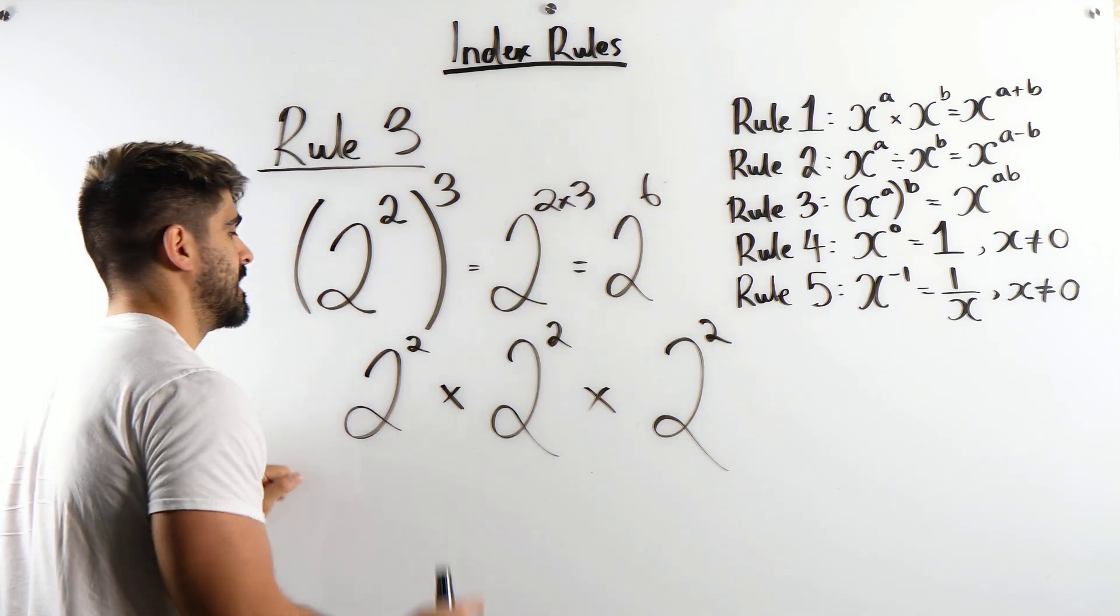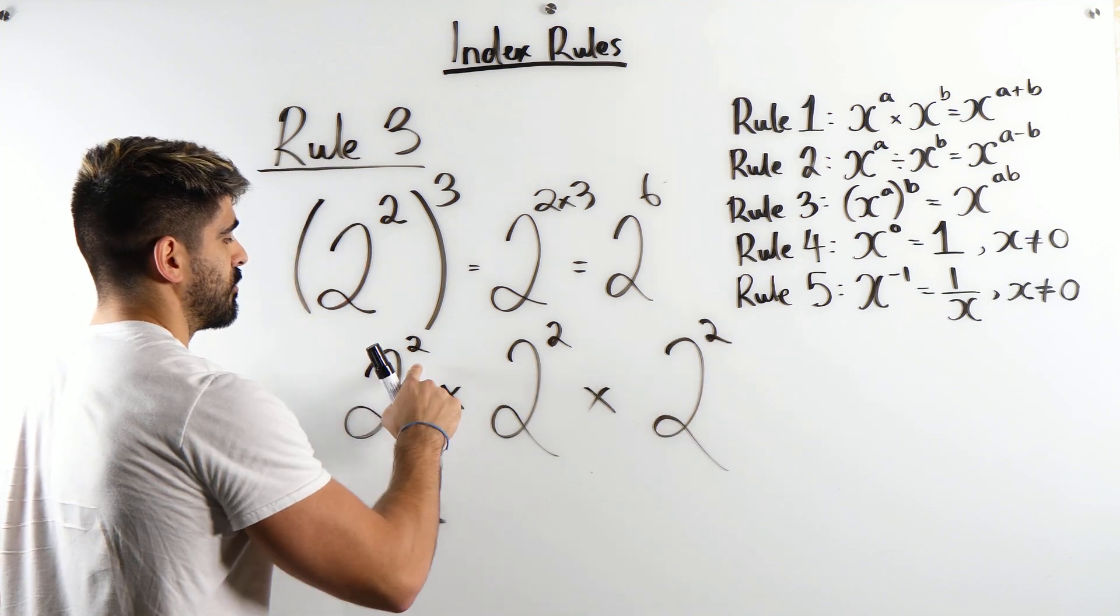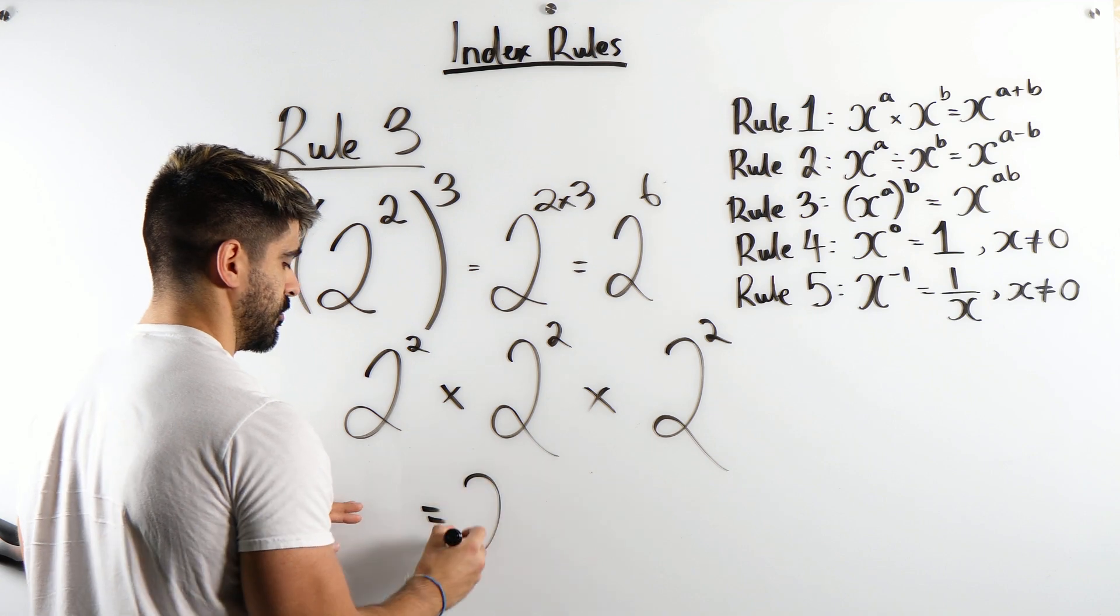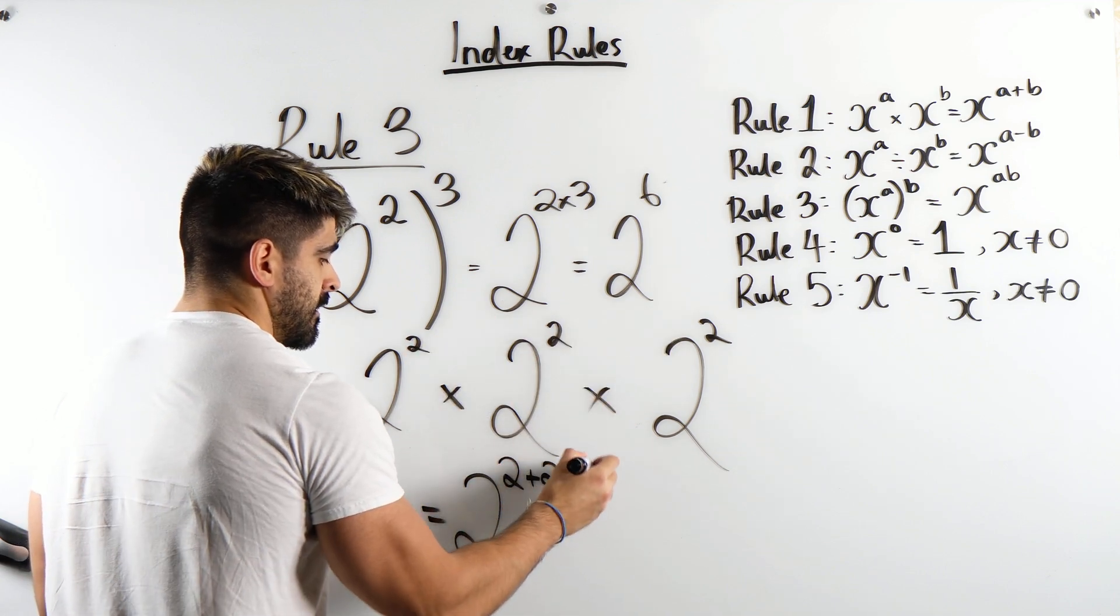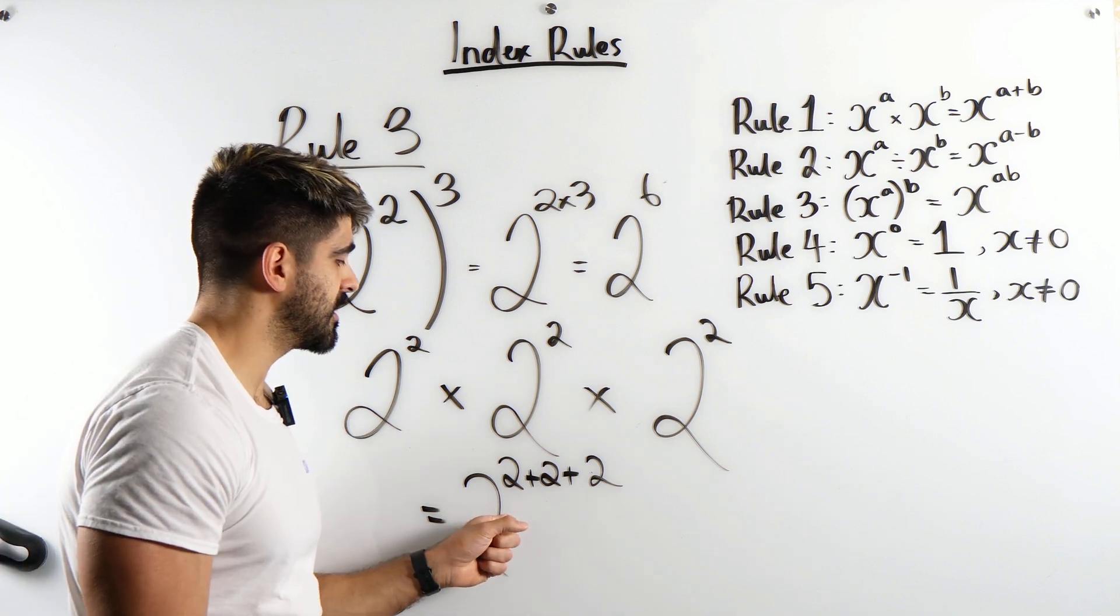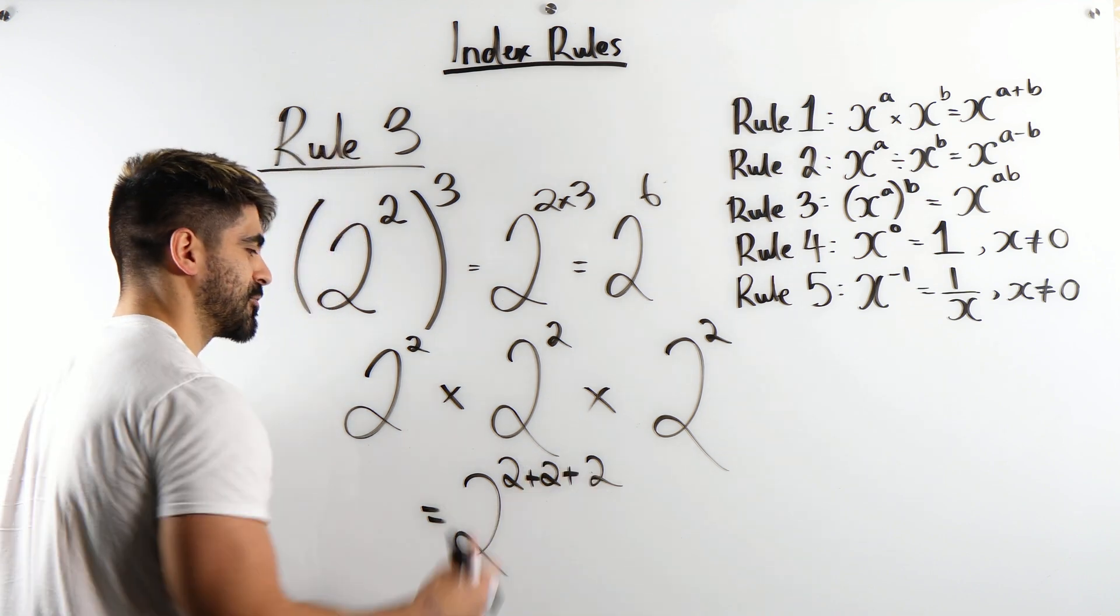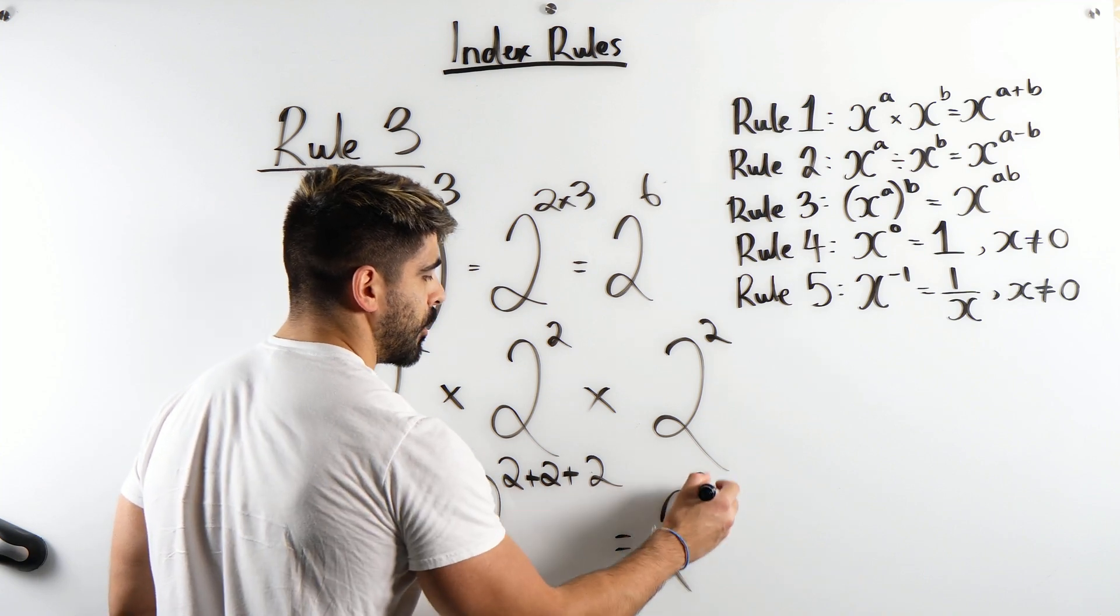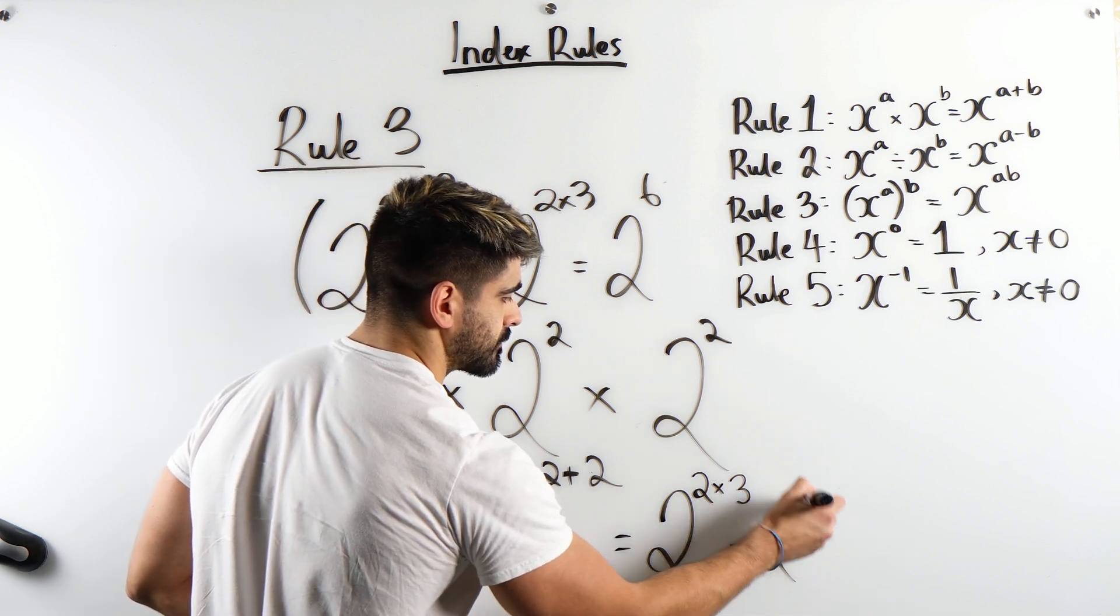Rule 1 is saying we now need to add all of these powers. So we're taking a number raised to a power but we're multiplying these three numbers with the same base. So we're adding the powers that will become 2 plus 2 plus 2. So here you have a repetition of addition. Repetition of addition can be represented with multiplication. So instead of saying 2 plus 2 plus 2, that is the same as doing 2 multiplied by itself 3 times which is 2 to the power of 6.